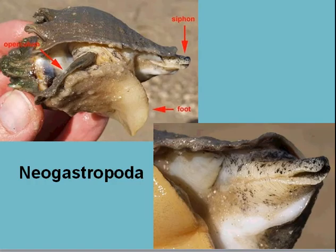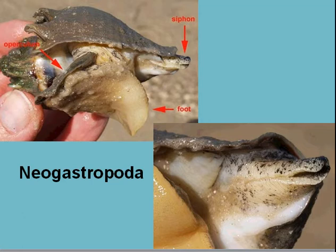This is what you would call a neogastropod. We're not really going to distinguish between the mesogastropods and neogastropods because they're very similar. The archaeogastropods are the older, rock and hard sediment-bound grazers, and now we have a few grazers, but mostly predators and scavengers.